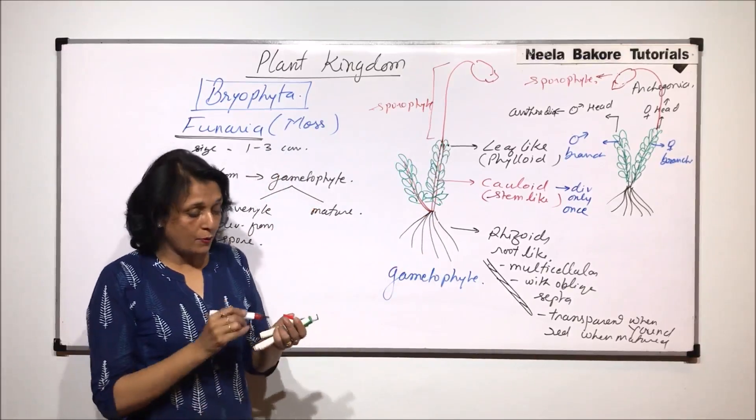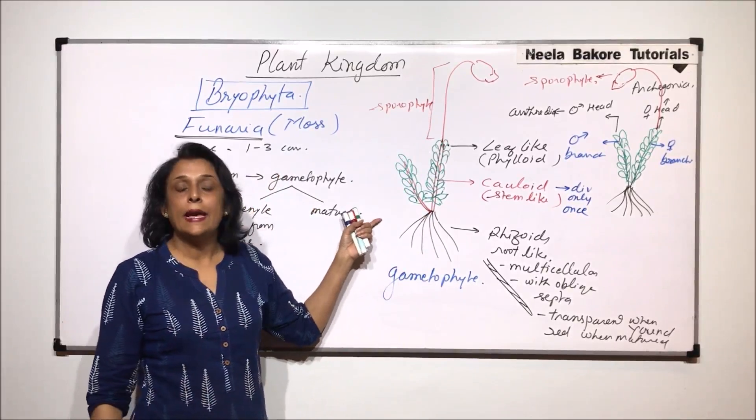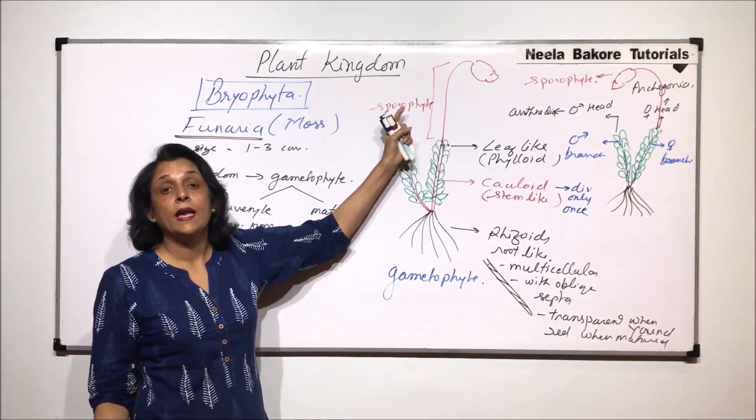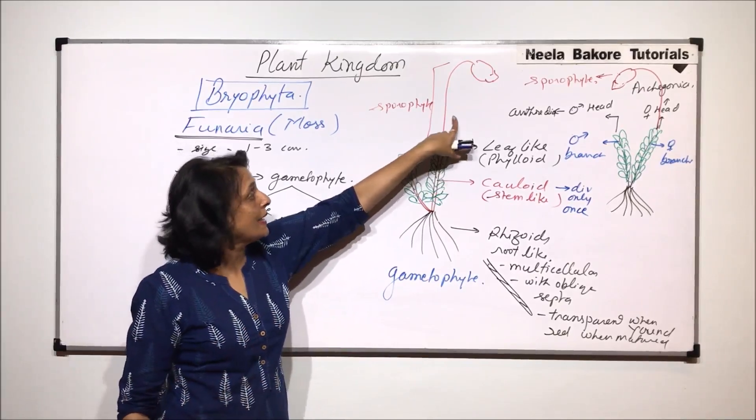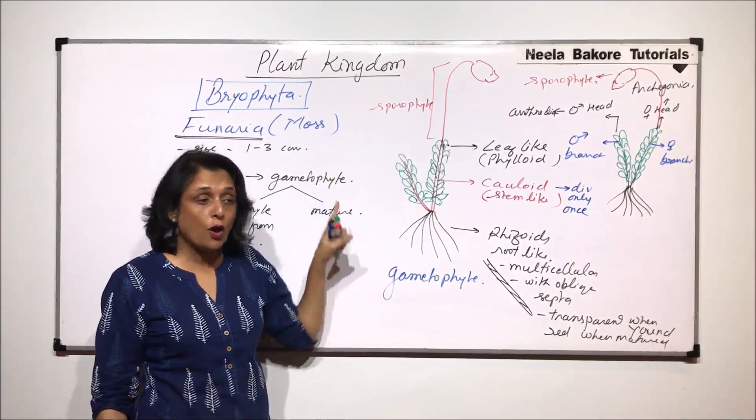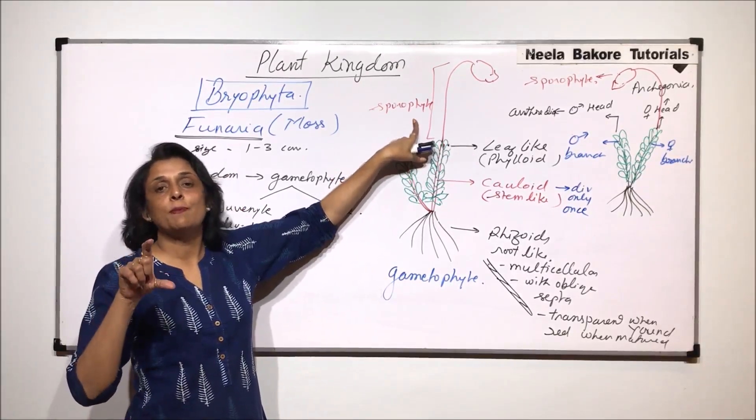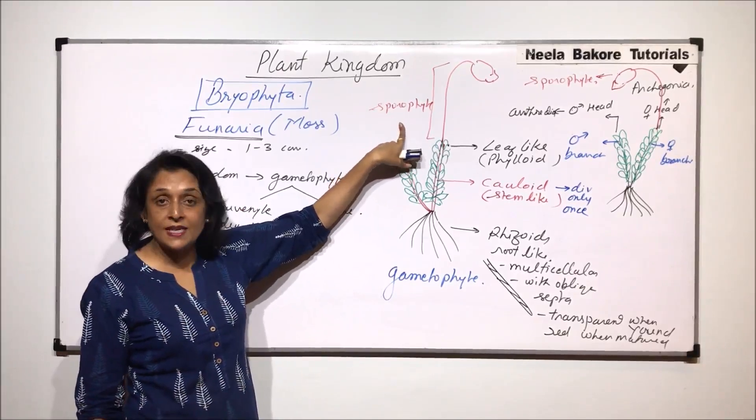This is what we said when we were talking about the bryophyte general characters. We said that gametophyte is the predominant stage. Sporophyte develops or grows on the gametophyte and it is going to draw its nourishment from the gametophyte. This stage that is only the sporophyte part is visible only when the reproduction has taken place.